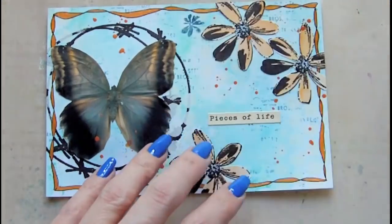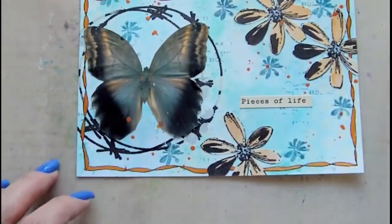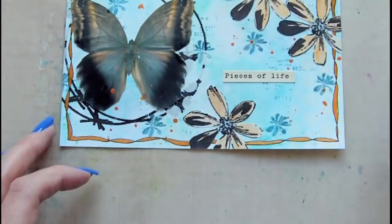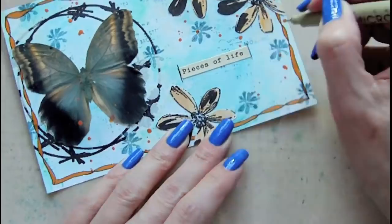This is the smaller flower from the Prima stamp set I used earlier. This time I'm stamping in cornflower blue, and once I've done this, I'm going to take a Micron pen and outline my text to give it a little more definition.